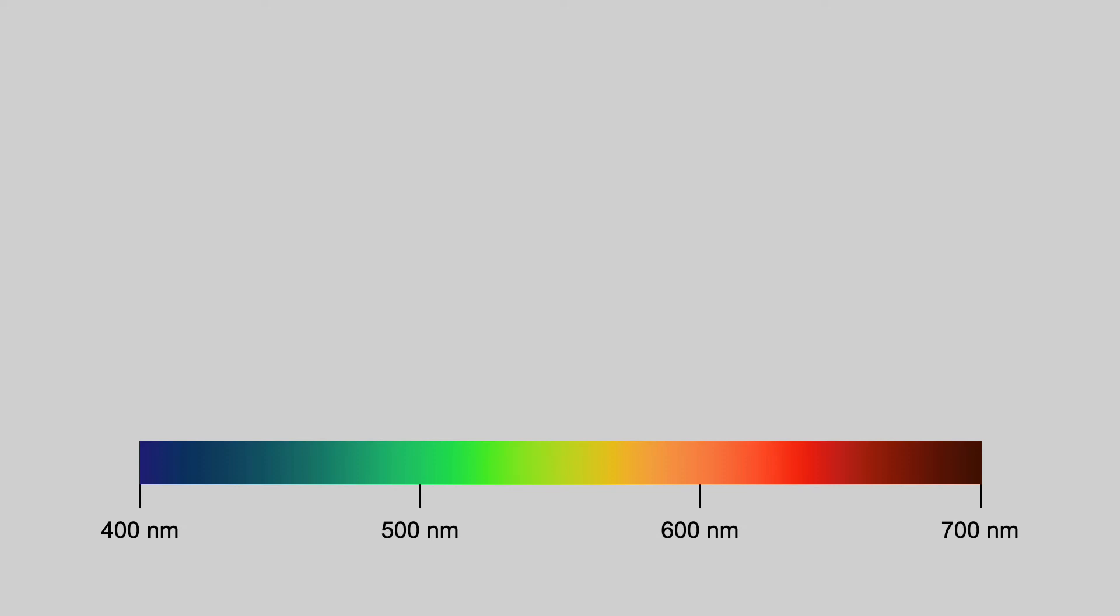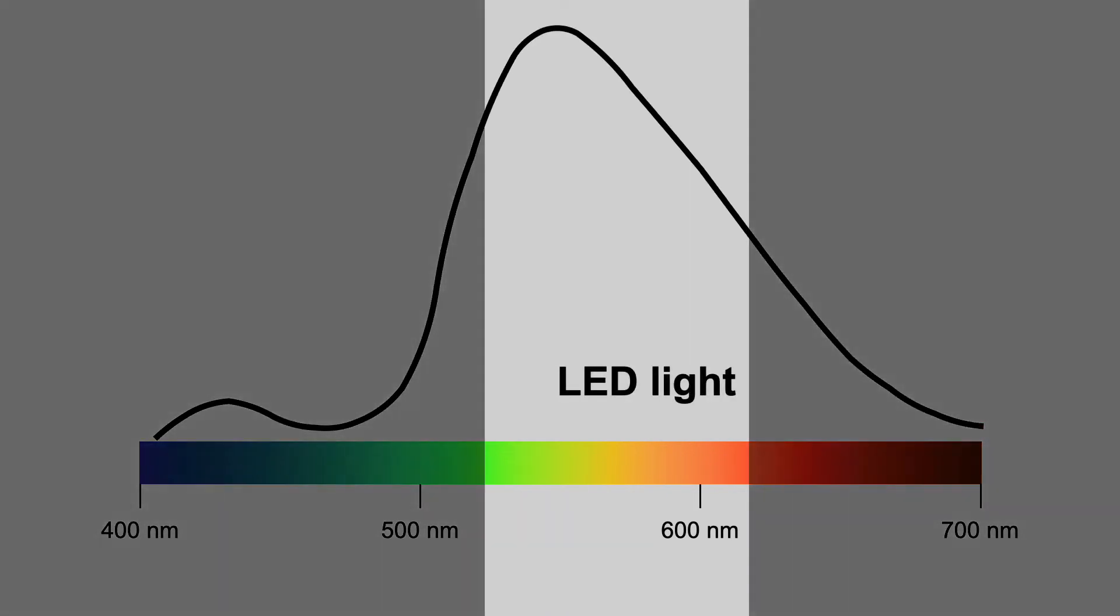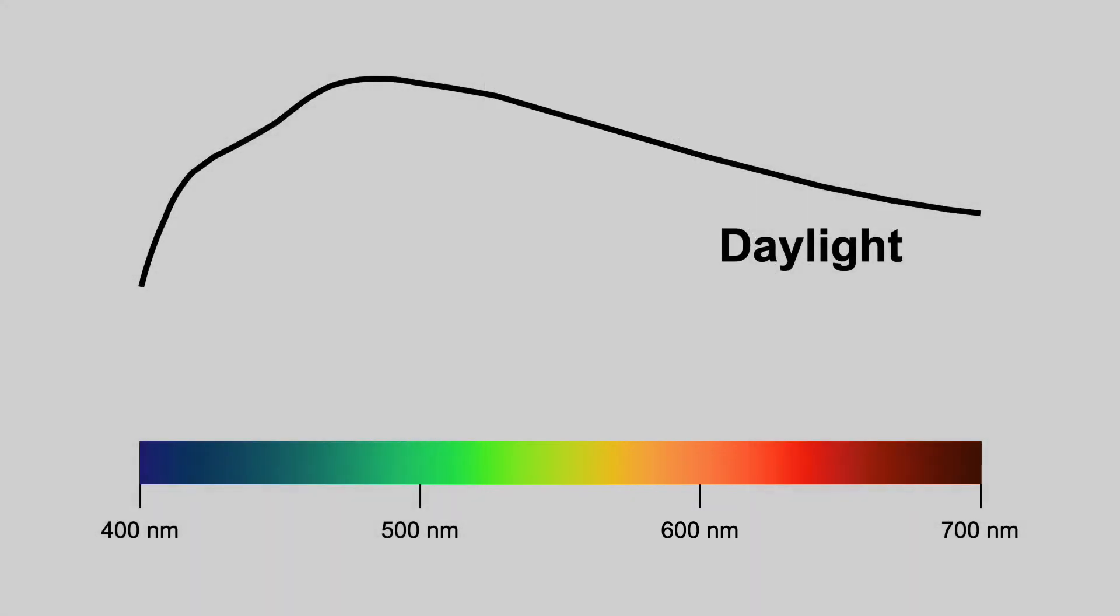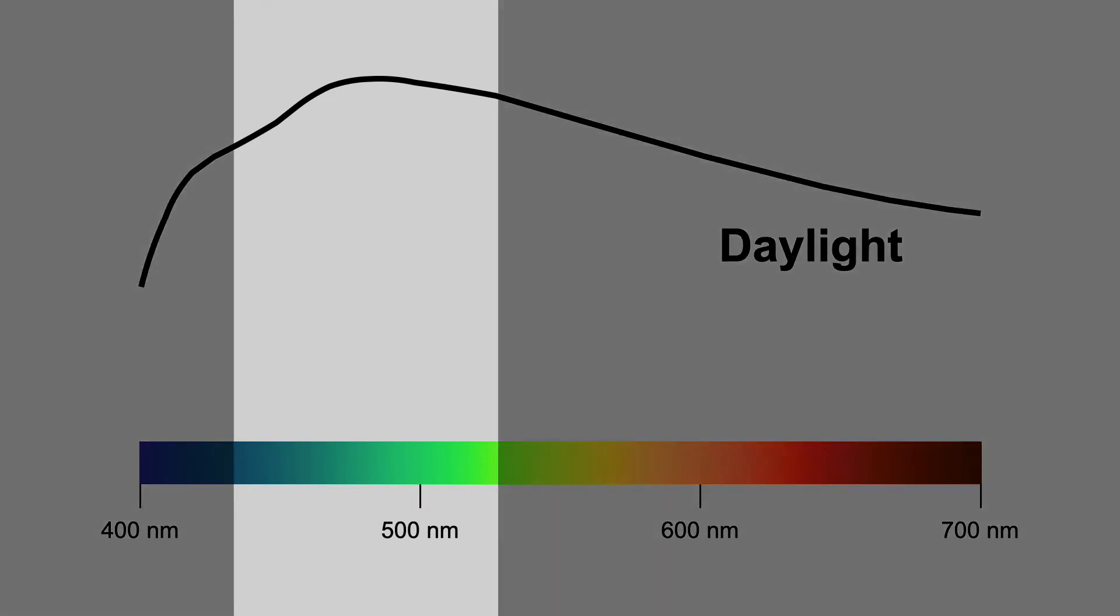But how much of each color is there? It depends on the kind of light. A warm LED light has this spectrum. There's lots of green, yellow, and orange, but not much blue. The daylight spectrum is a lot different. It's got a lot of blue and green.